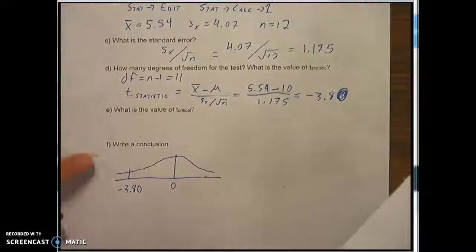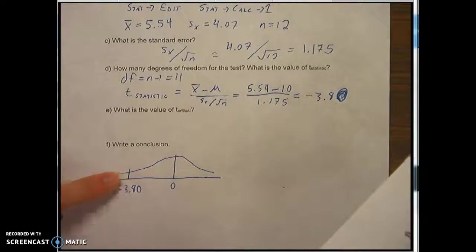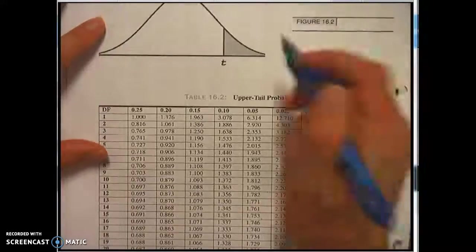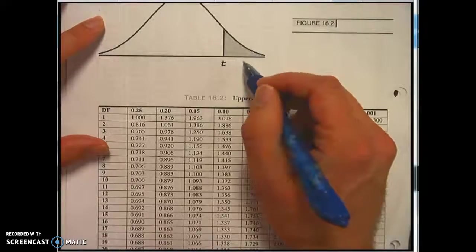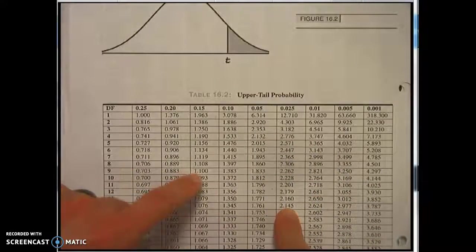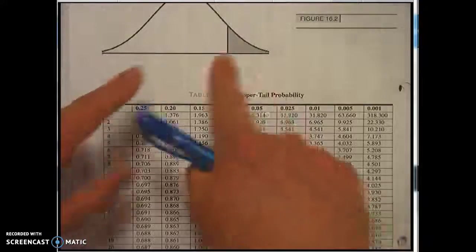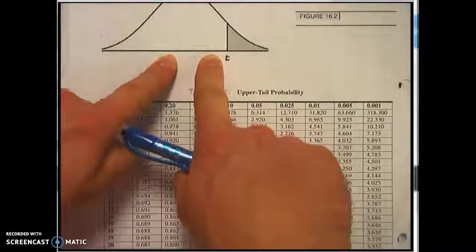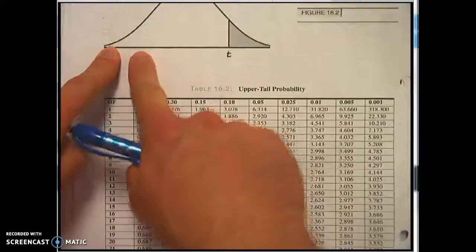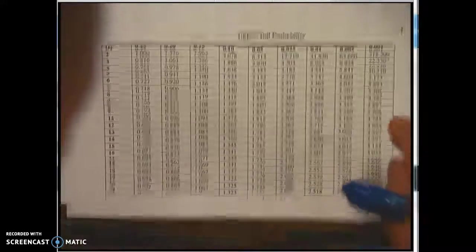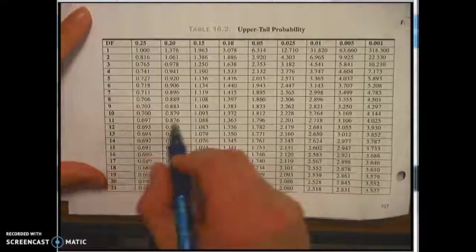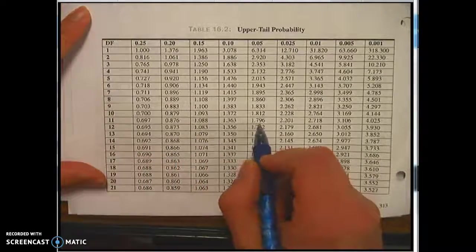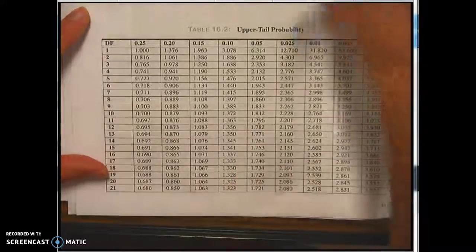Now our significance level was 0.05 or 5%. And if you look at the chart I drew, that 5% is going to be on the left. This chart is on the right. Which means we're going to get a positive value at 0.05 but the t curve is symmetric. So we just go ahead and take the one on the other side and make it negative. So I'm looking at 11 and I'm going to 0.05 and I got 1.796.